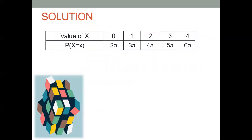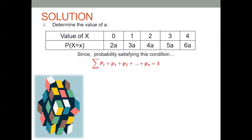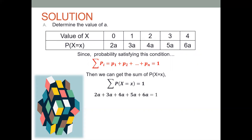Let's start. The first question is to determine the value of a. Since the probabilities satisfy the condition that the summation of p sub i equals 1, the sum of all probabilities of x equals 1. Therefore, 2a plus 3a plus 4a plus 5a plus 6a equals 1. Combining like terms, we have 20a equals 1. Using the multiplicative property of equality, multiplying both sides by 1 over 20, the value of a is equivalent to 1 over 20.